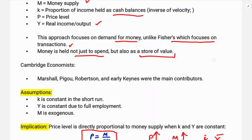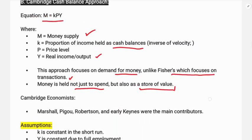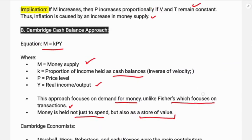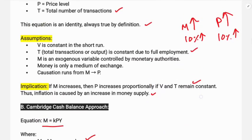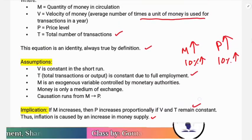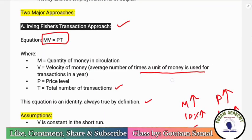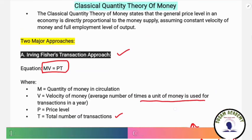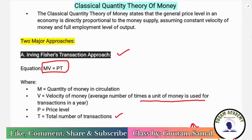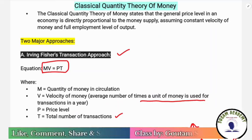The implication of both approaches is that an increase in money supply leads to an increase in the price level. So this is about the classical quantity theory of money — the transaction approach and the Cambridge cash balance approach. That's all for this class.